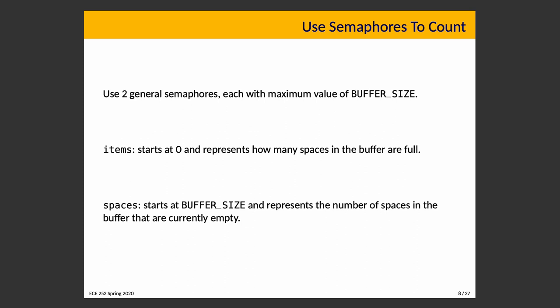We create two semaphores. If your semaphore system allows a maximum value, you'd set it to buffer_size. 'items' starts at zero and represents the number of filled spaces in the buffer. 'spaces' starts at buffer_size and represents the number of currently empty spaces. At the beginning of time when everything is created, the buffer should be empty. If you're resuming a program with partial state and there were already 10 items, you'd adjust both semaphores accordingly. But normally, items is zero and spaces is buffer_size.